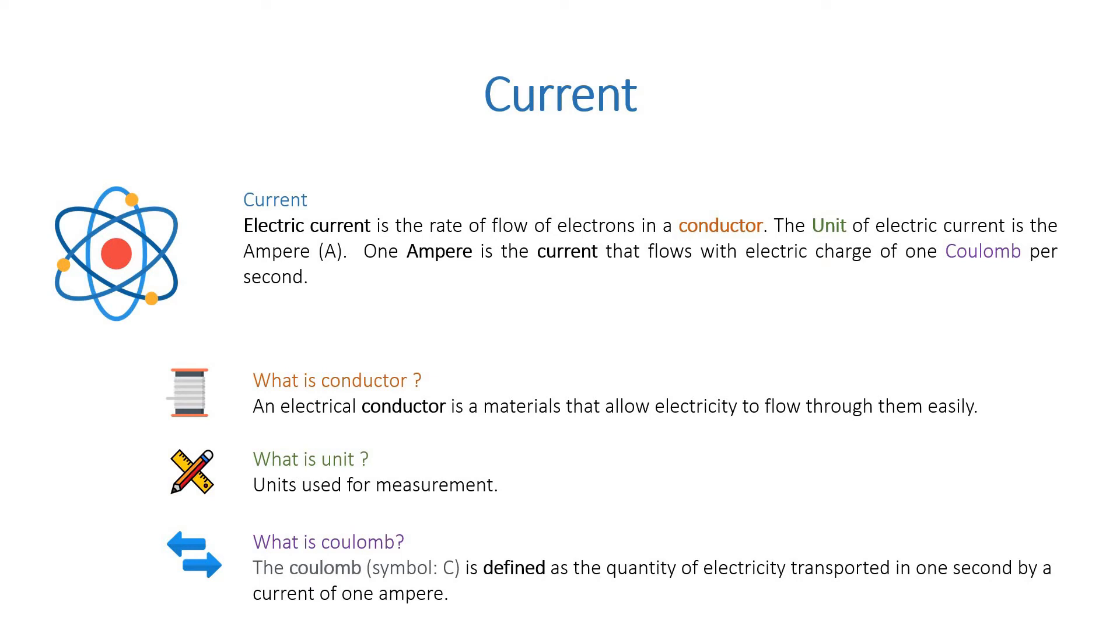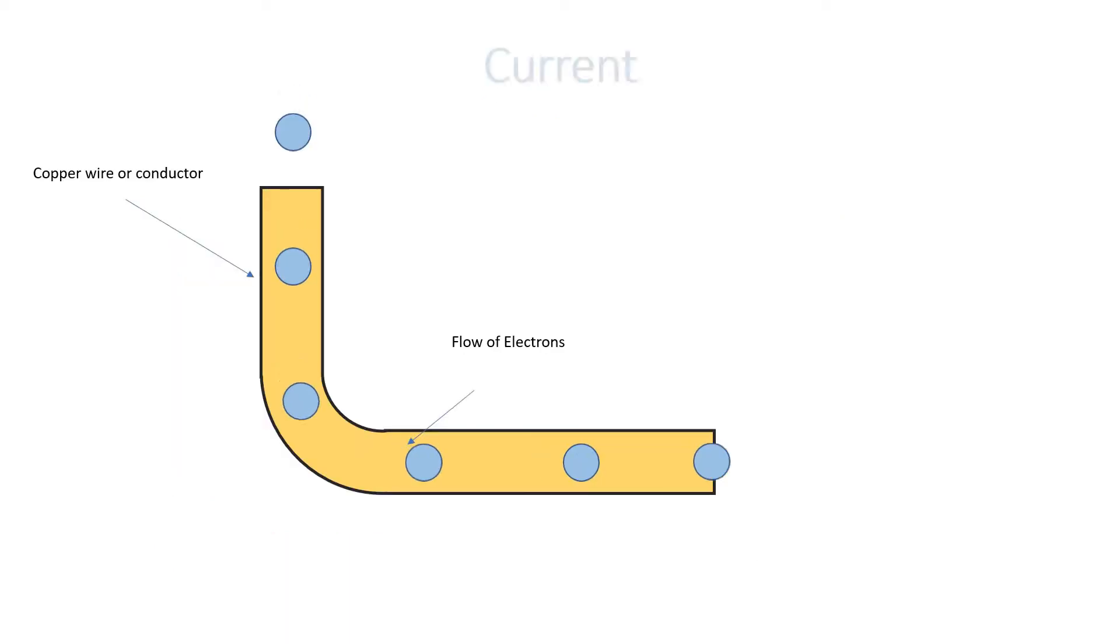Or you can also call it simply A. Now one ampere is the current that flows with electric charge of one coulomb per second. Here you can see the flow of electrons through the copper wire.